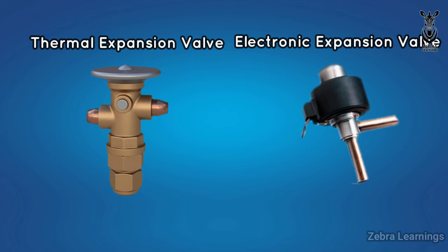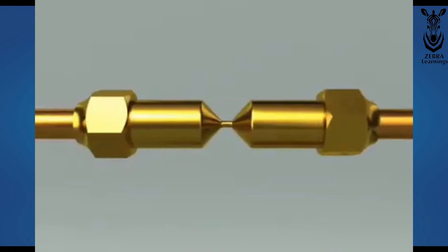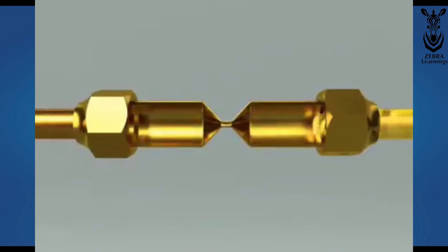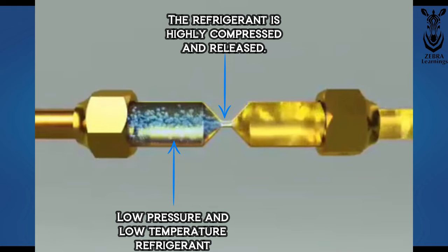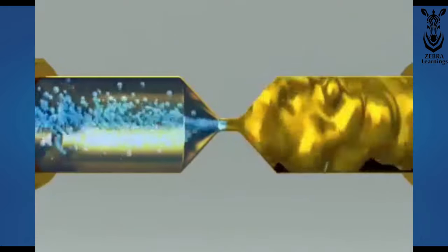But whatever the expansion valve is, its important job is to reduce the pressure of the refrigerant that comes from the condenser at high pressure. By reducing the pressure, the temperature of the refrigerant will decrease.